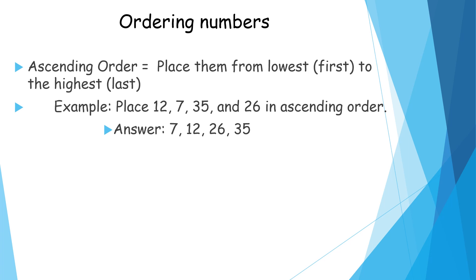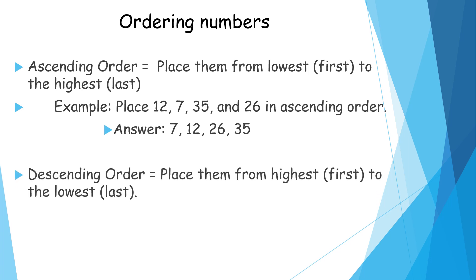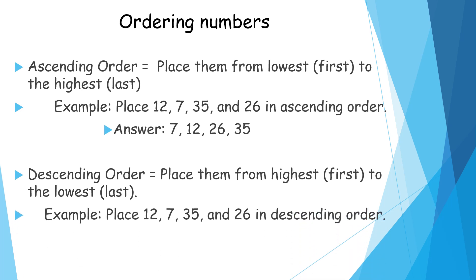Now let's go to descending order. What is descending order? Descending order lays them from highest first to the lowest last. Example of descending order: place number 12, number 7, number 35, and number 26 in descending order. And the answer is number 35, number 26, number 12, and number 7. That's how we do it in descending order.